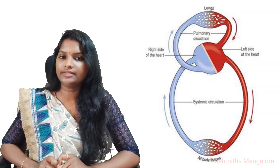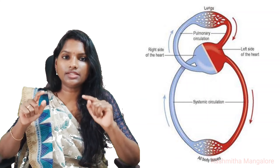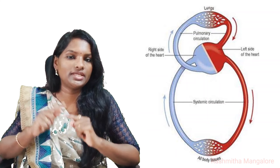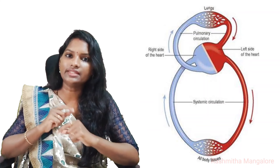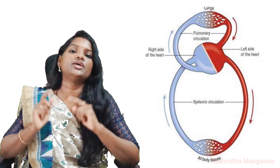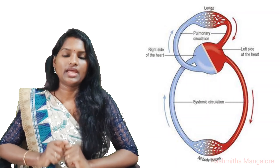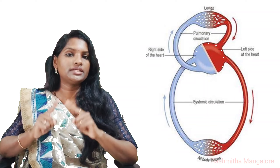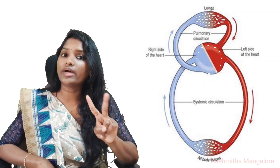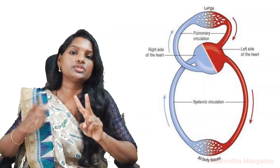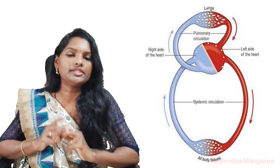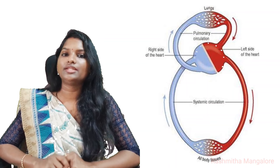The lungs oxygenate the blood and return it back to the heart, and then the heart pumps the oxygenated blood to the body. As seen here, the blood returns back to the heart twice before it goes to the body — this is why it is also called double circulation in the human heart.